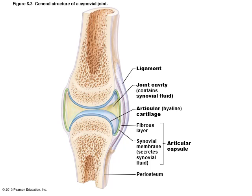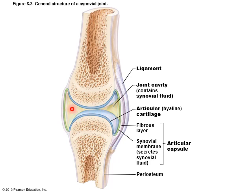All synovial joints share common structures. They all have articulating cartilage, an articular cavity, and an articular capsule that goes around the joint. The articular capsule is made up of fibrous connective tissue, and you also have the synovial membrane on the inside that secretes synovial fluid, which fills the open space.